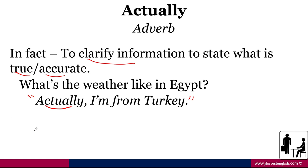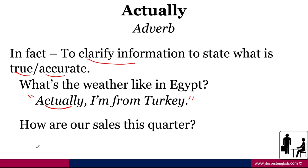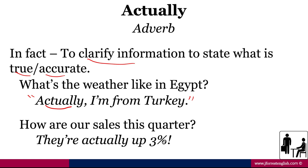So another example: let's say my boss says, 'How are our sales this quarter?' And I reply, 'They're actually up 3%.' I use 'actually' here because the assumption was that our sales would be down, even though it wasn't explicitly stated — it's just obvious based on the current economy or company environment. So this would be surprising information for my boss. By using 'actually,' people would think the sales would be down, and I'm clarifying it.